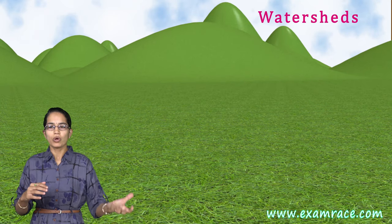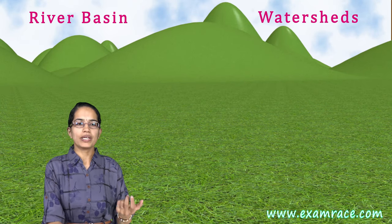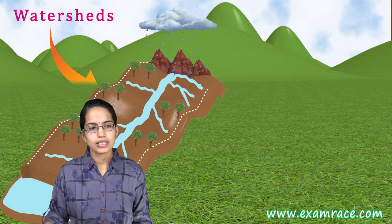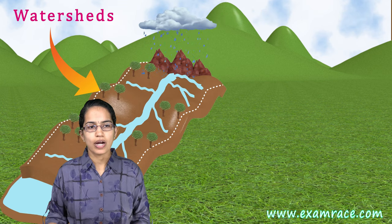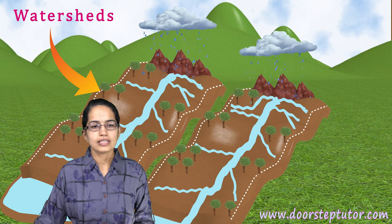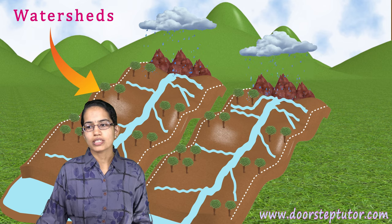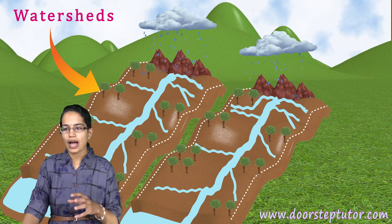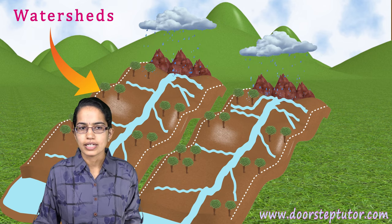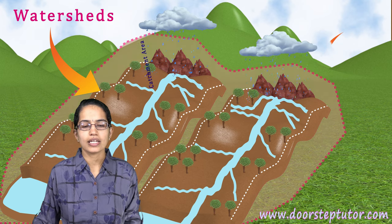A watershed is a kind of boundary that separates one drainage basin from another. With this watershed, you have small rivers that are separated from each other. When I talk about catchment area, it is usually a larger region that we consider.